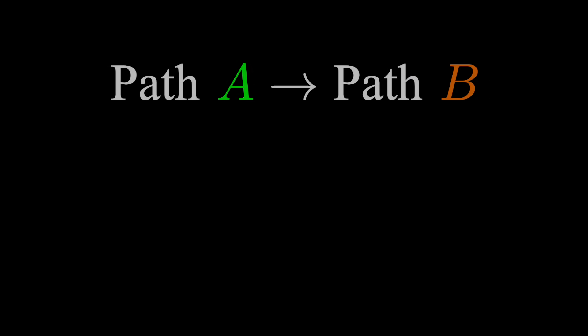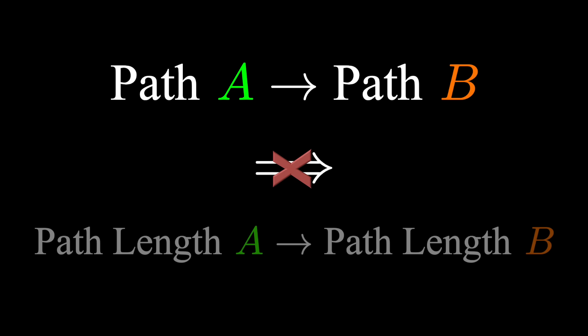So, should we conclude that the length of this diagonal is 2? And the answer is, of course not. The problem with this is that just because one path approaches another, it doesn't mean that the length of the path approaches the length of the other.